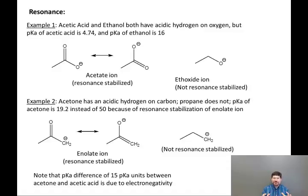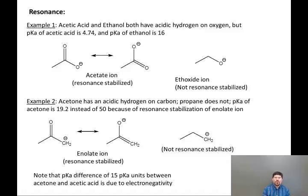We can also note that there is a pKa difference of 15 units between acetone and acetic acid. The only difference between the acetate and the enolate is whether the minus charge is on carbon or oxygen in one of the resonance structures. In acetate, both structures have the minus charge on oxygen. In the enolate, one structure has the minus charge on carbon. That difference in electronegativity — carbon at 2.5 versus oxygen at 3.5 — is responsible for the 15 pKa unit difference.